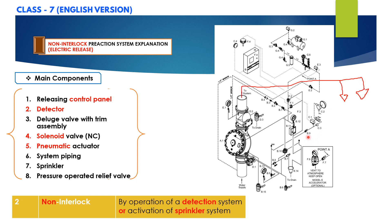In short, a non-interlock pre-action system utilizes an electric solenoid valve controlled by an approved system control panel with a compatible detection system, and also a pneumatic actuator. In the event of damage to the sprinkler piping or sprinklers, the deluge valve will open and water will flow from any opening of the sprinklers and any other opening in the sprinkler system piping.